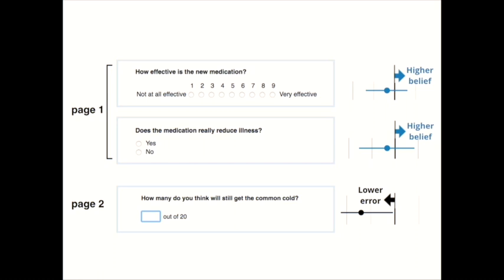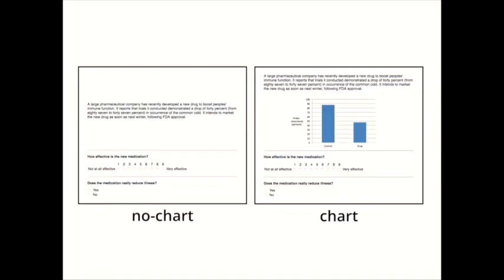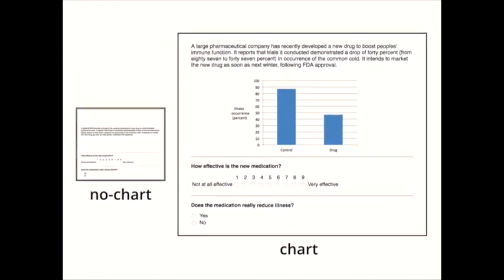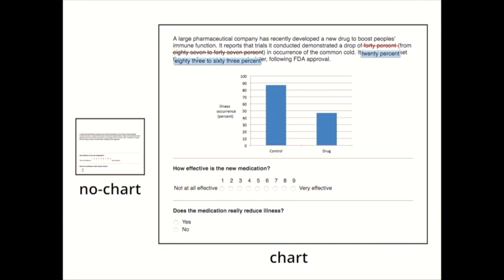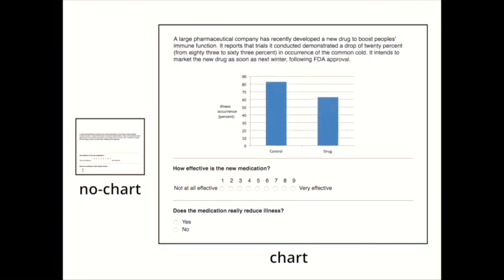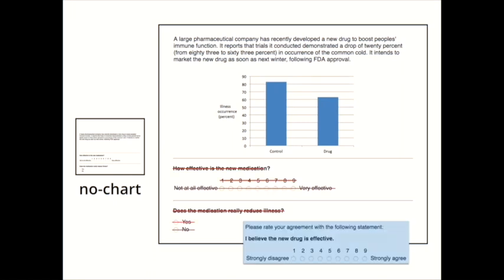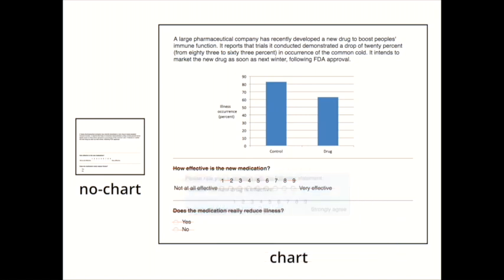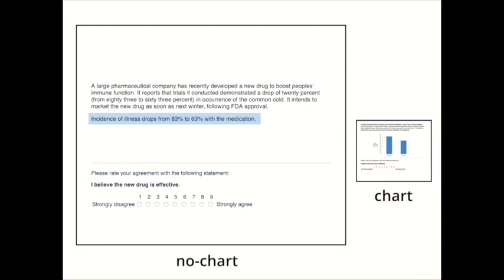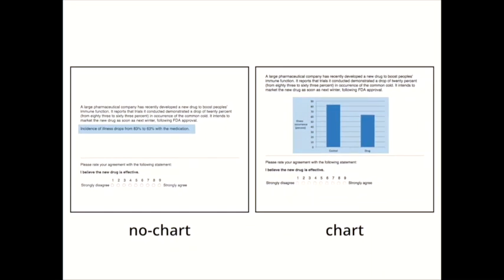So we wanted to focus on replicating the second experiment from the original study. There were two experiments. So in the second experiment, they introduced a few changes. First, the data was changed in the two conditions. And the 40% drop became a 20% drop. The chart was updated. Also, the two questions were replaced by a single one asking people to report the degree to which they believe the new drug is effective. And finally, in the no chart condition, a new line of text was added that repeated the percentages using numerals. So this put the no chart condition on a more equal footing with the chart condition since in neither condition did people have to find the fully spelled out numbers in the text. And we wanted to know whether the chart here in this case would still help.